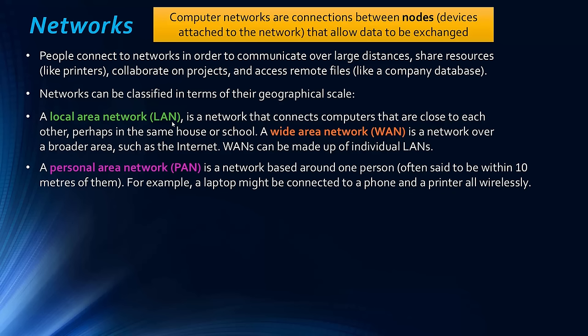Another type is a personal area network, or PAN — a network based around one person. Unlike a LAN, which might be based around a school or household, a PAN is centred on one individual. It's often given a definition of 10 metres. For example, you might have your own laptop connected to a phone via Bluetooth and a printer wirelessly — that would be a personal area network.